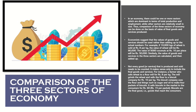The first slide discusses the comparison of these three important sectors of economy. In an economy there could be one or more sectors which are dominant in terms of total production and employment, while other sectors are relatively small in size. Comparison of the three sectors can be done on the basis of value of final goods and services produced.